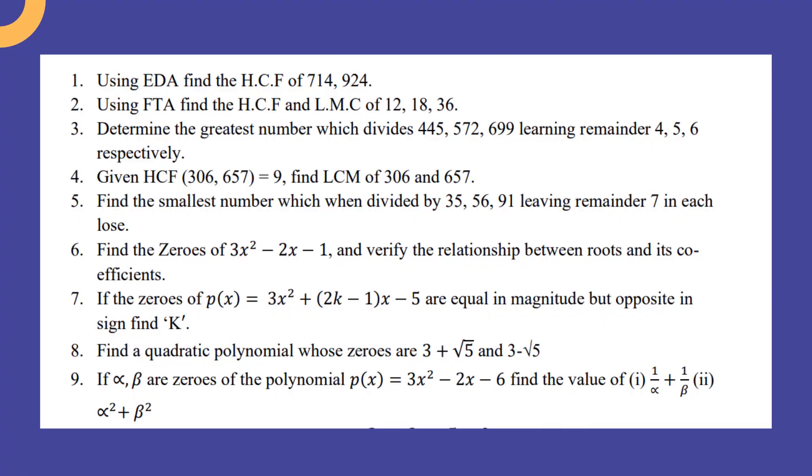Using Euclid's algorithm find HCF of 714 and 924. Using FTA find HCF and LCM of 121836. Determine the greatest number which divides 445, 572, 699 leaving remainder 4, 5, 6 respectively. Given HCF of 306, 657 is equal to 9, find LCM of 306 and 657.